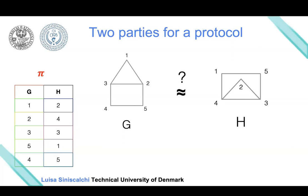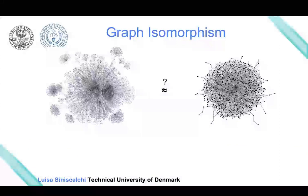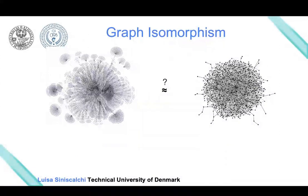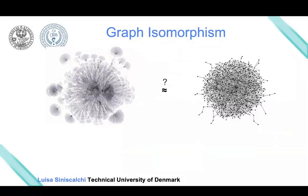This is an example with very few nodes, so it's easy to check whether there exists a permutation between these two graphs. But what about the case where the graphs are very big? In that case, it's not so easy anymore to determine if two graphs are isomorphic or not.